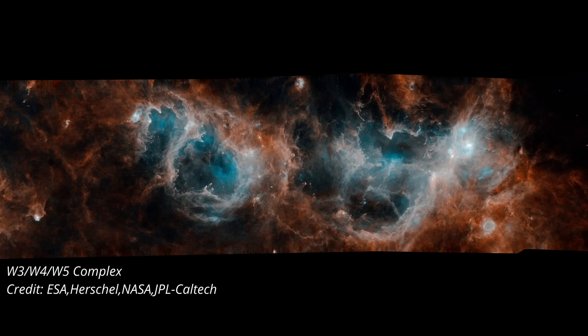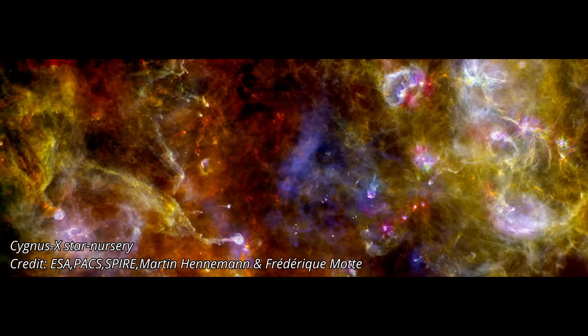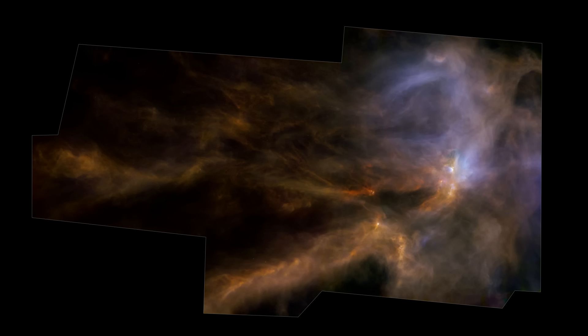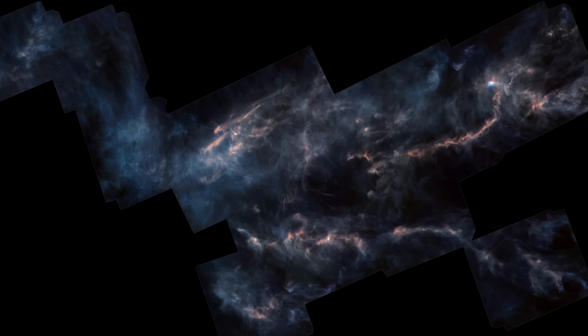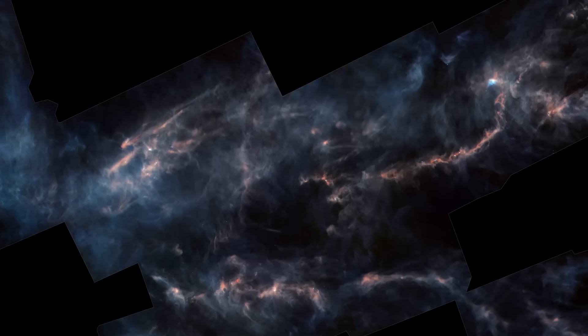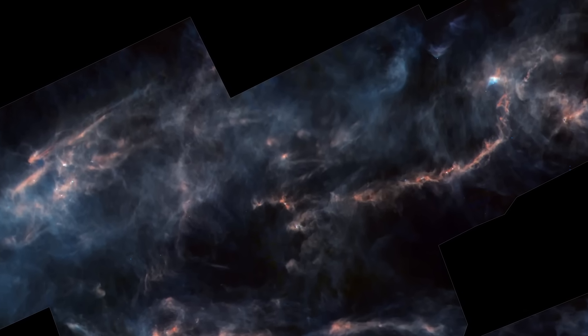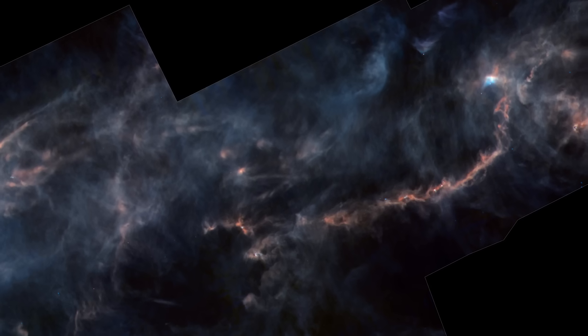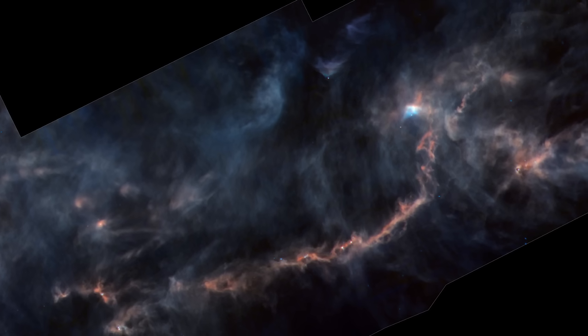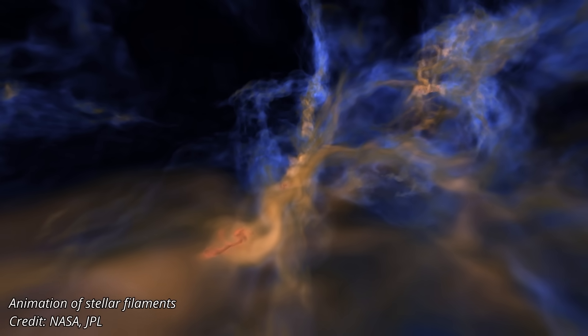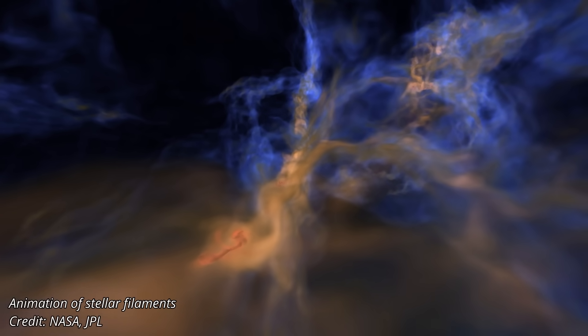Surveys like the Herschel studies reveal that these filaments are not just coherent and resilient, they seem to have a surprising rigidity, maintaining their shape even as stars form within them. And even more intriguing, they all appear to have nearly the same width, around a tenth of a parsec. And these filaments are not rare. The sky is full of them. They form vast, interconnected networks that weave the raw material of stars into intricate patterns we're only beginning to understand.